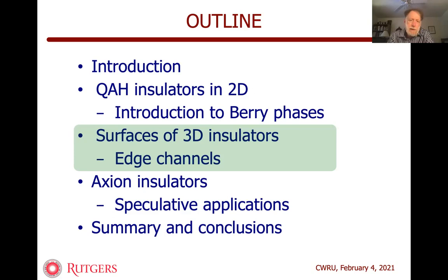What I want to do in the rest of my talk is move on to the other category of system: so-called axion insulators. These are three-dimensional systems. I need to talk about three-dimensional insulators and their surfaces, anomalous Hall conductivity at the surfaces, and edge channels at the surfaces. When I've done that, I can do the axion insulator story pretty quickly.